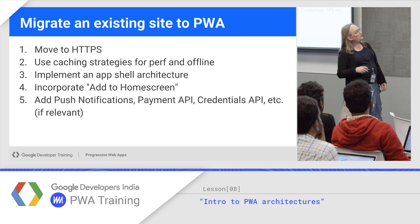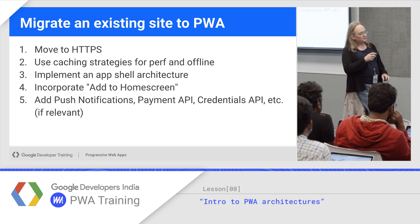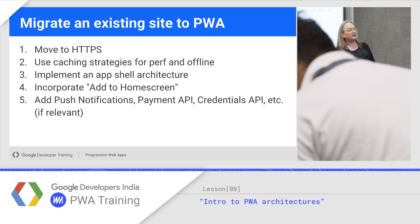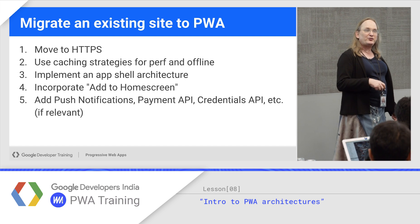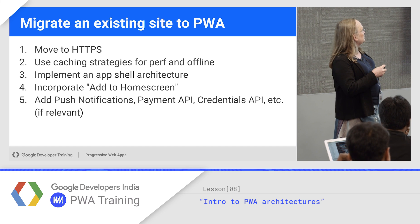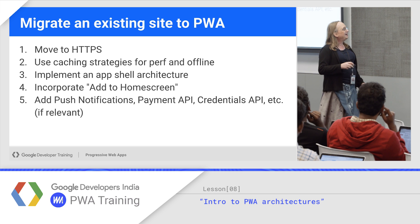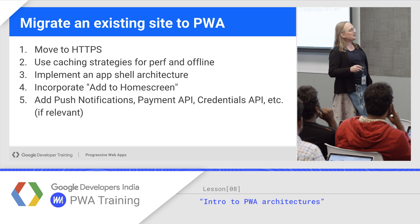One way to move an existing site to PWA is: first, deploy HTTPS. Use caching strategies, both for offline to make it work there, but also for performance — cache the things you need to make it work fast. We haven't talked about the app shell architecture yet, and we'll cover that in a minute. You should also add a home screen manifest file, and then add the other special features like push notifications, payments API, and credentials.